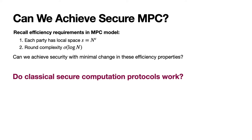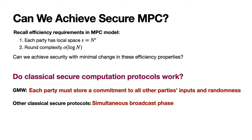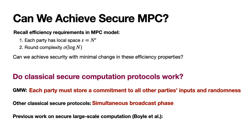It makes sense to consider some classical secure computation protocols and understand why they don't extend to our model. The original secure computation protocol by GMW has a problem: at the very beginning, each party has to store a commitment to all other parties' inputs and randomnesses, meaning every party has to store data that's at least linear in the size of the input. Most other classical secure protocols have a similar problem in that they all have a simultaneous broadcast phase, where every party has to send a message to every other party. Previous work on secure large-scale parallel computation also involves a simultaneous broadcast phase, so none of these options will work for us.